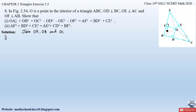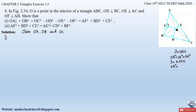In triangle OAE, applying the Pythagoras theorem: since angle AEO is a right angle, OA is the hypotenuse, so OA² = OE² + AE². Similarly, applying the Pythagoras theorem in triangle AFO: OA² = OF² + AF².